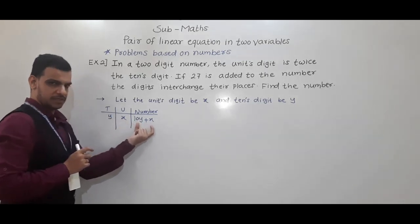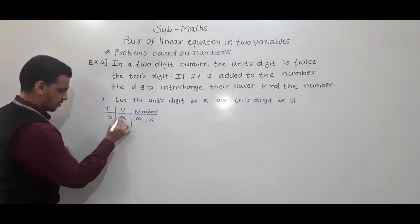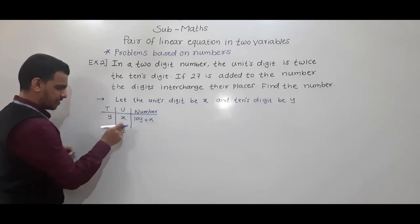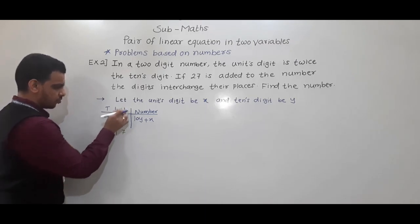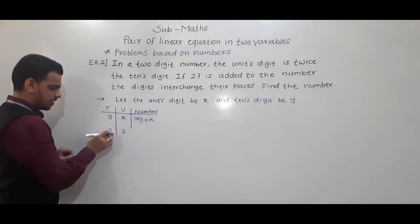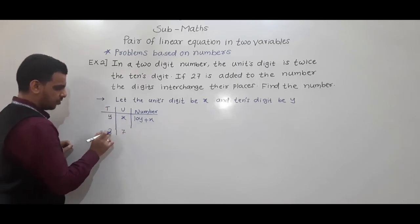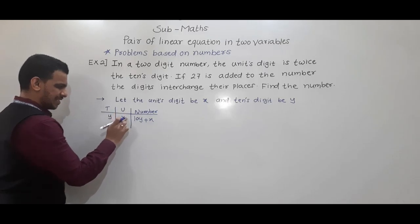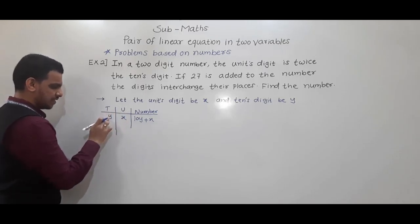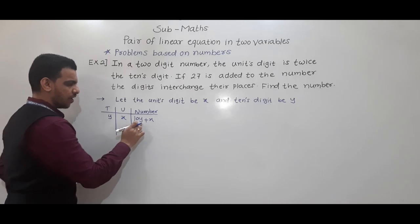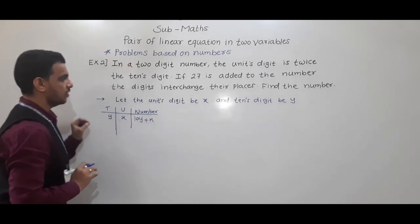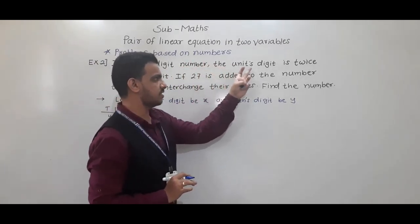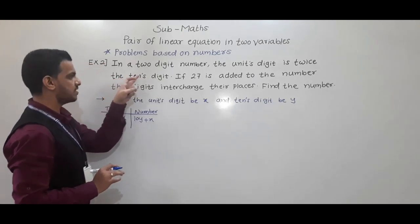Many students don't understand how the number is formed. For example, if units digit is 7 and tens digit is 2, the number is 27 — which we can write as 2 into 10 plus 7. Similarly, if units digit is x and tens digit is y, the number is 10y plus x.